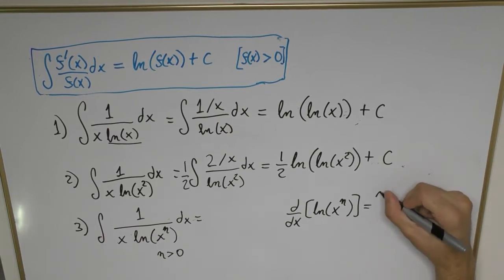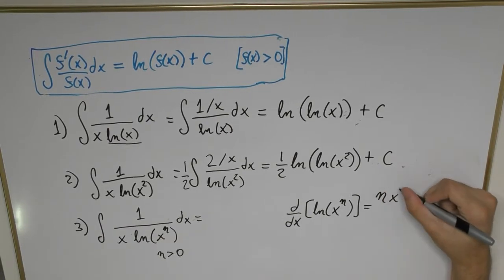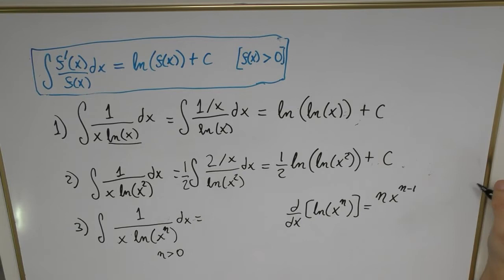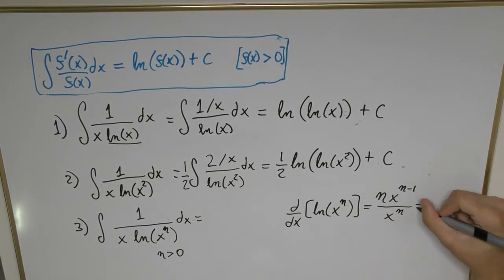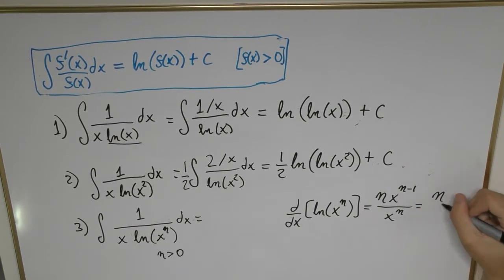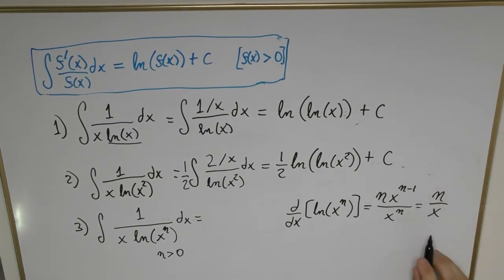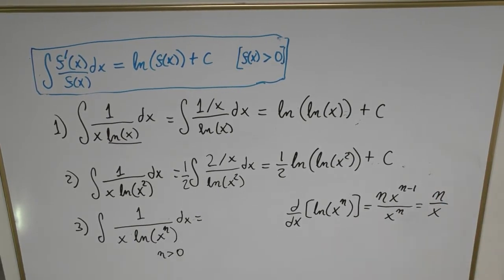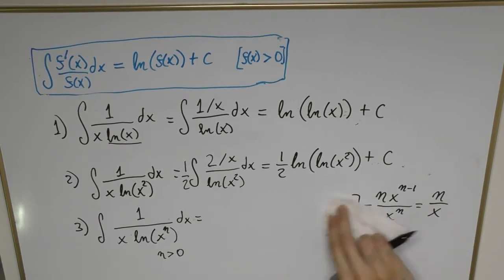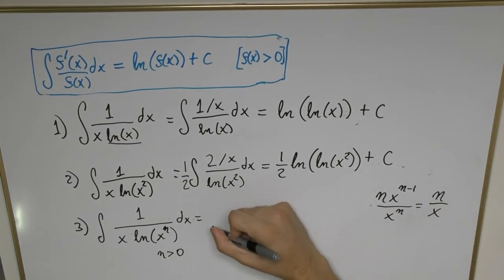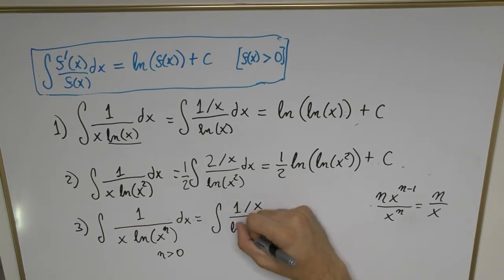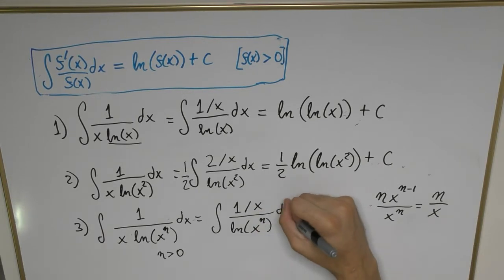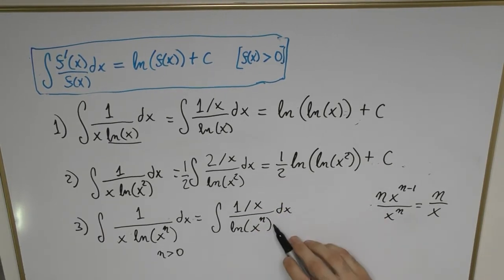Differentiating that is going to give us n·x^(n-1) divided by x^n. Now we're going to cancel out the power, so that's going to leave us with n/x. Just as we did before, we're going to express this integral as ∫(1/x)/ln(x^n) dx. The only thing missing is that n factor at the front.